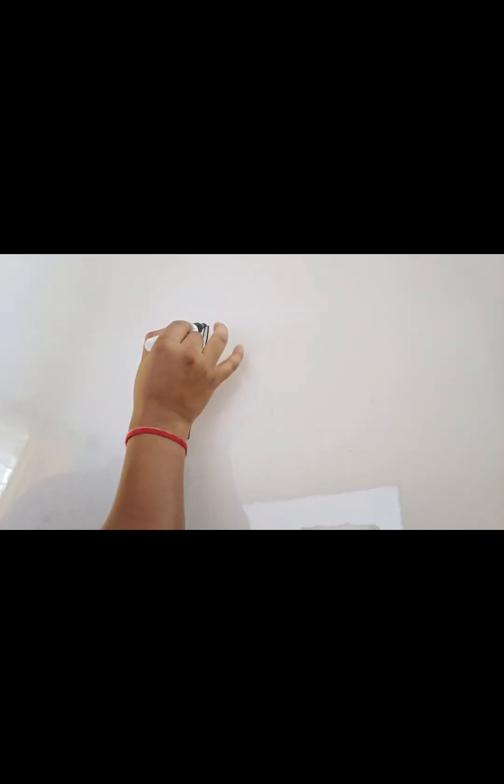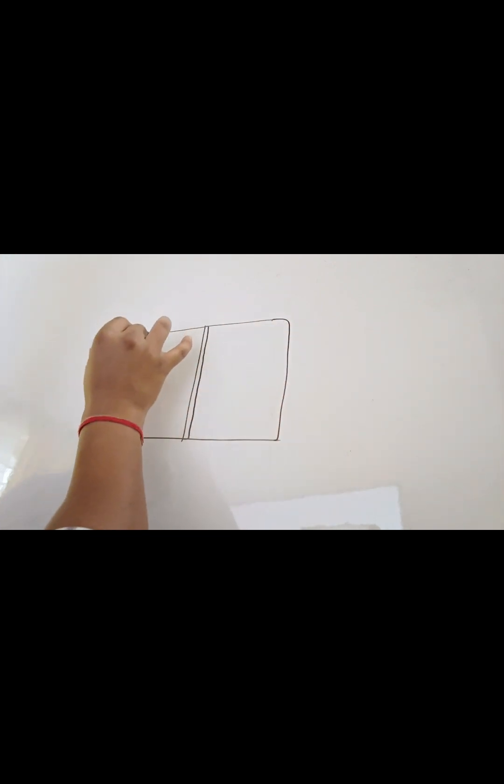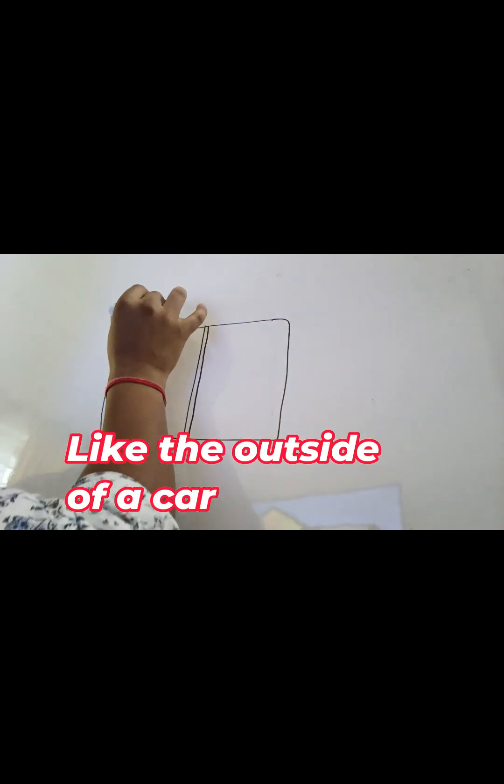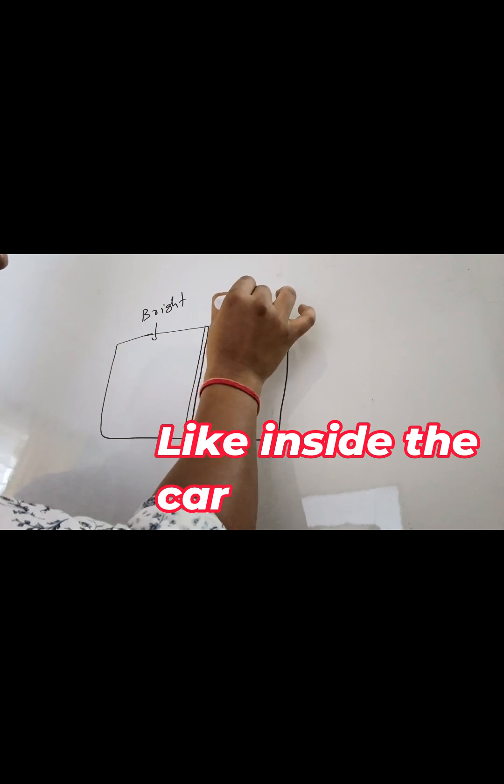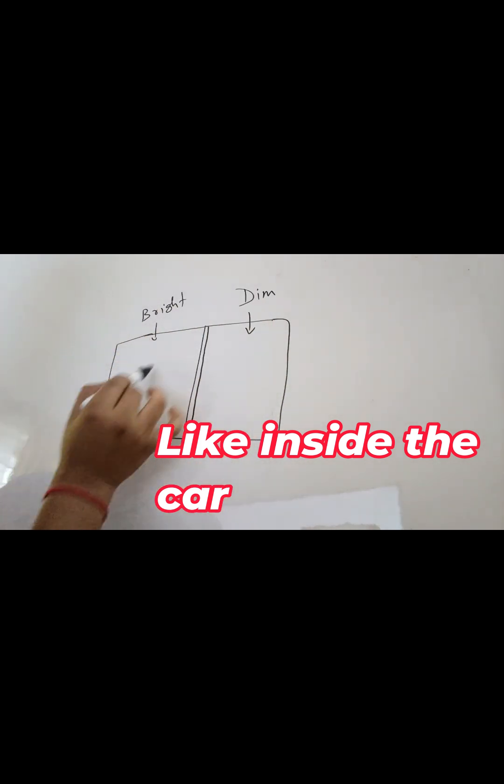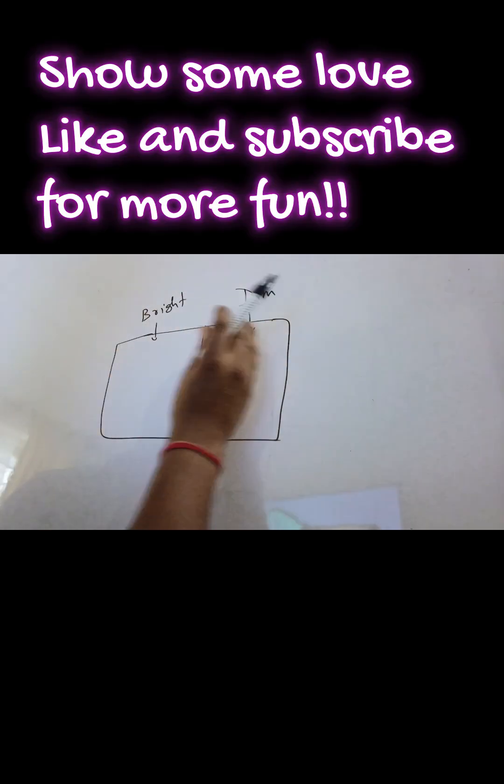So now what we have to do is keep this one-way mirror between two rooms. This room has to be very bright, okay? Whereas the other room should be dim, should not be very bright.